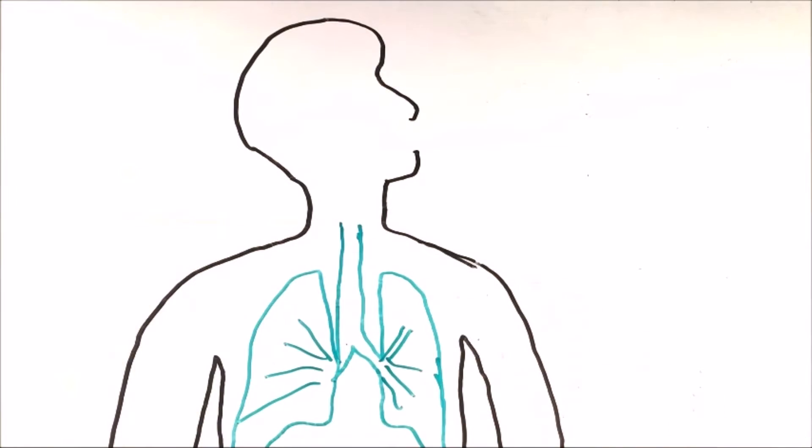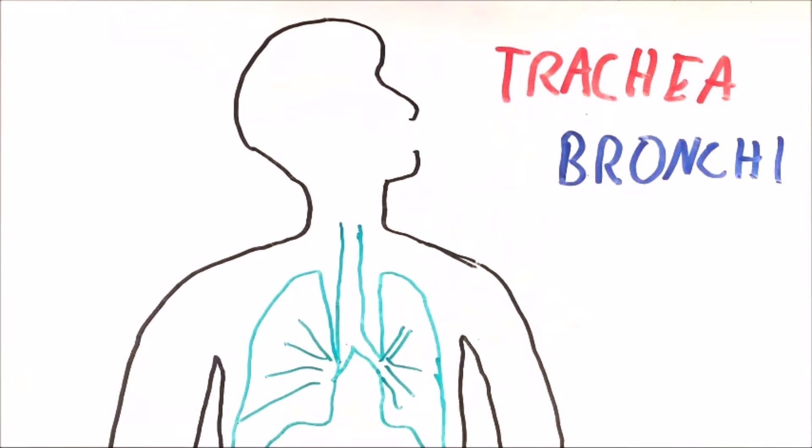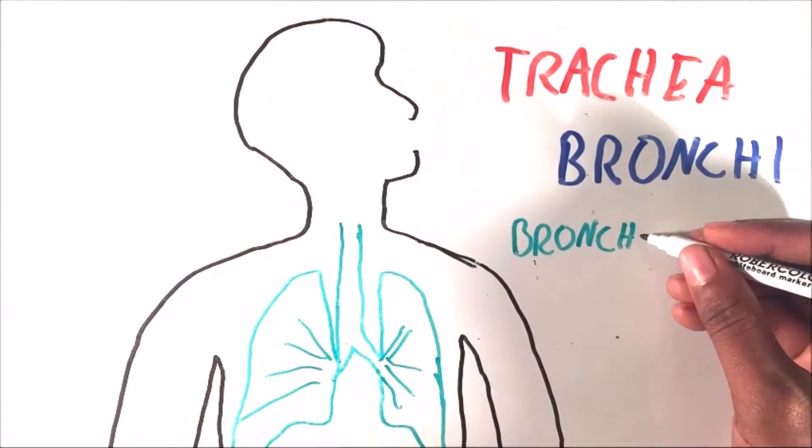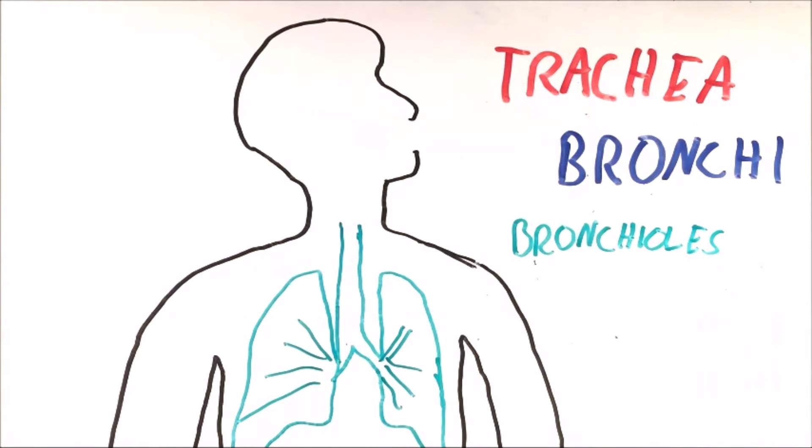Now these tubes are called the trachea, which splits into two primary bronchi. These then further branch into secondary bronchi and eventually they branch into bronchioles. The importance of asthma occurs within these tubes.